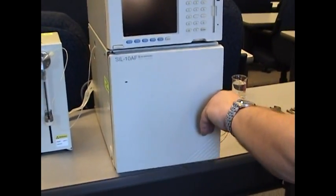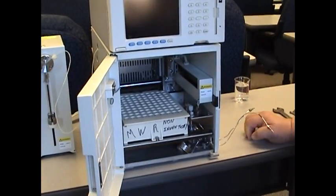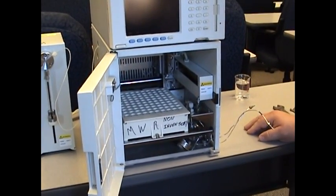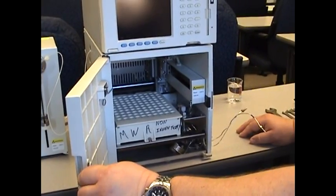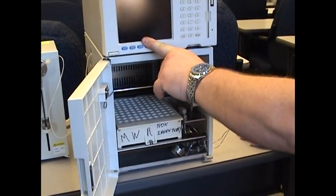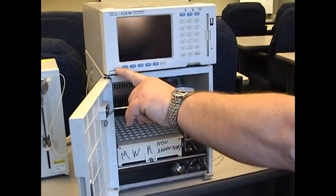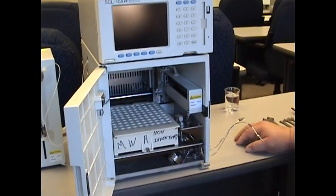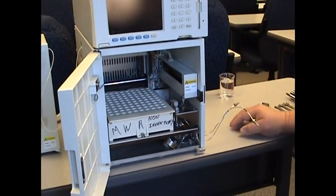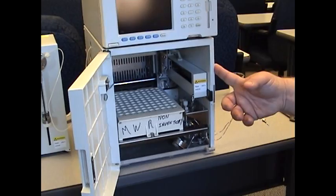Let's talk about how we're going to replace the needle today in the instrument. First thing we want to do is make sure that the controller is turned off and we are backed out of any kind of software that you may have. That will turn off the power to the autosampler.